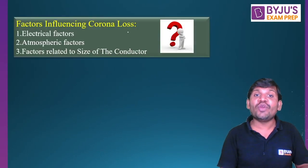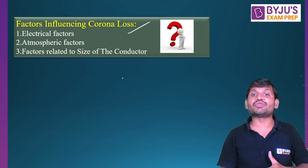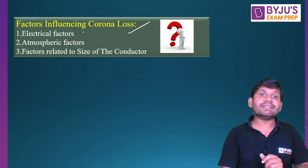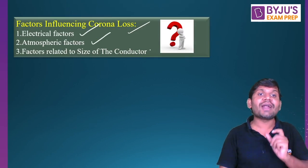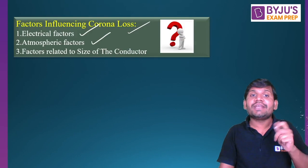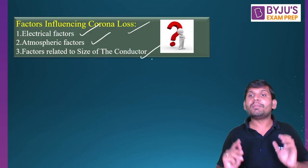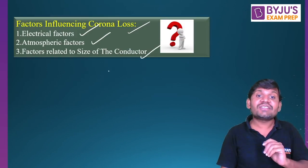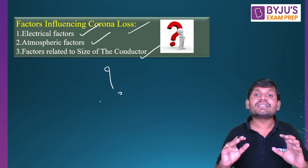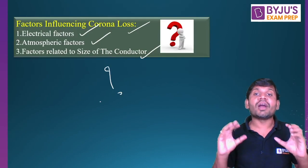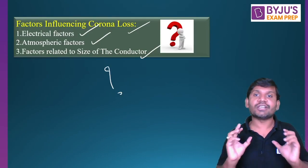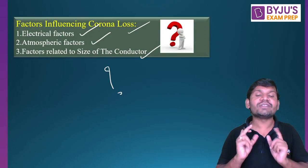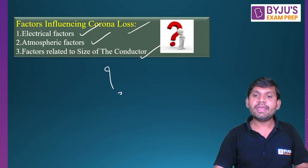What are the factors influencing corona loss? The factors that affect corona loss are: electrical factors, atmospheric factors, and factors related to the size of the conductors. How these factors affect the corona loss will be discussed in the next episode. Factors influencing the corona loss — yes, that will be the next concept.